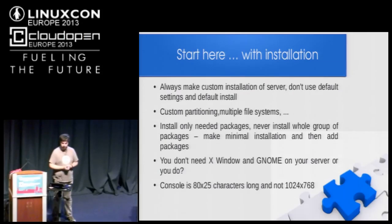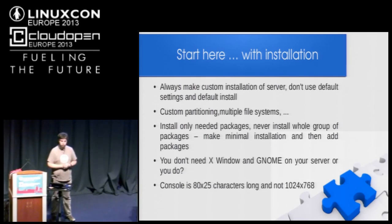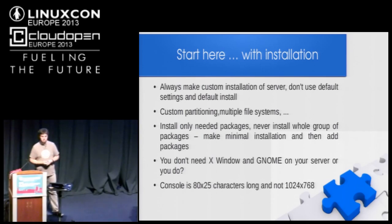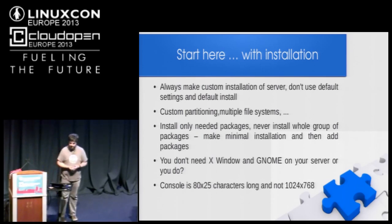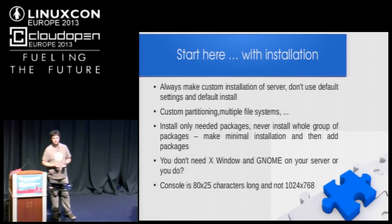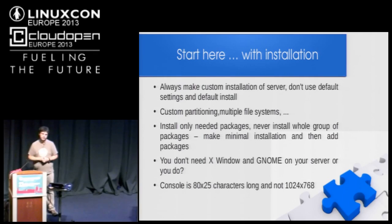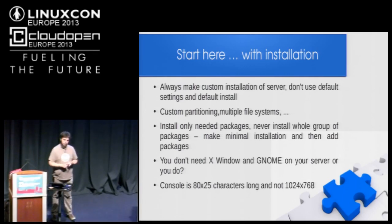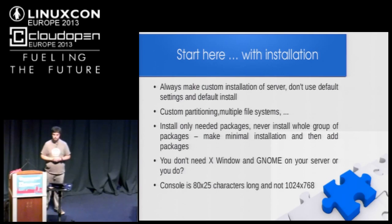It always starts with the installation of the server. You must always make a custom installation. Don't use default settings — don't just click next, next, next, finish. This is the worst thing you can do. Always do custom partitioning, because when you install with default settings, the partitioning scheme is just a swap partition and a root partition. With custom partitioning, always make separate partitions for /var, /tmp, /boot, /root, /home, /usr, /opt, because if some of these fill up, Linux will stop working.